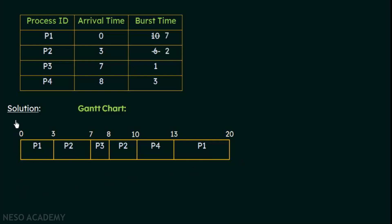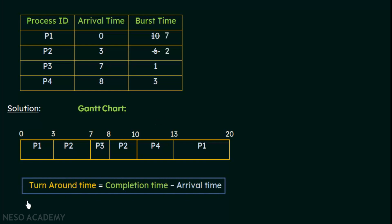Now that we have the Gantt chart, we have to calculate the average turnaround time. The formula for turnaround time is: completion time minus arrival time. The turnaround time is the total time the process spends from arrival to completion, including any waiting time. We will calculate the turnaround time for each of the four processes P1 to P4.